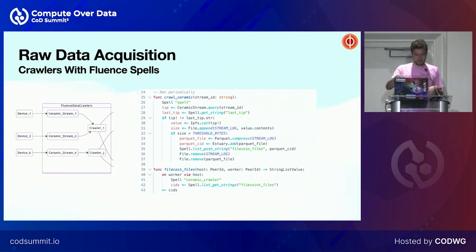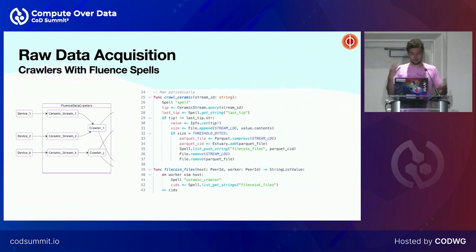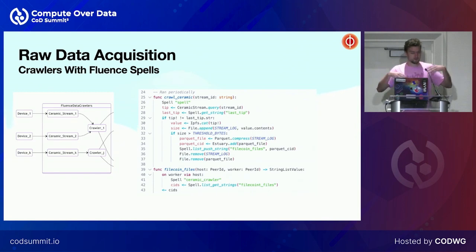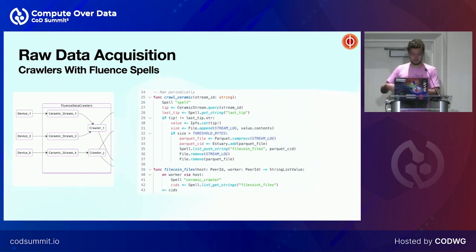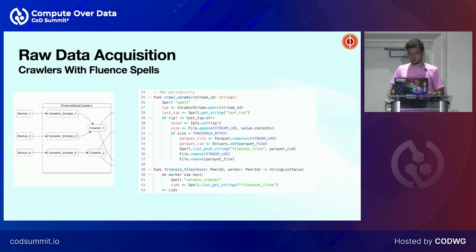That's a very simple example of gluing a bunch of different technologies together through a simple script. Here it happens on a single peer, but since it's a recurring task it can involve more peers. You can imagine this scaling to something we call a subnet — you pay to the blockchain and say, I want this happening on a bunch of peers, reading from a bunch of streams, all put into Filecoin. That's basically how you can build simple crawlers with Fluence and orchestrate different services.